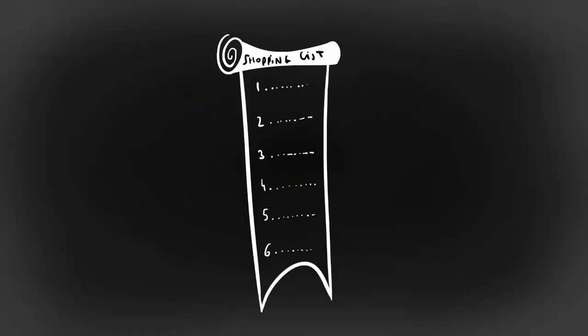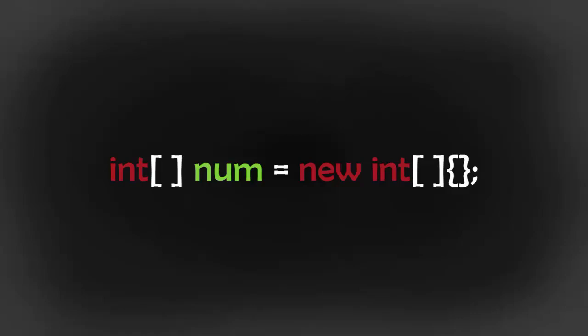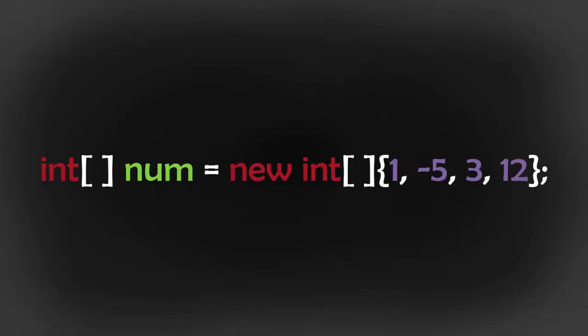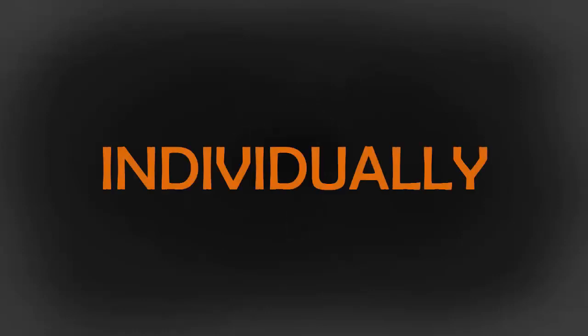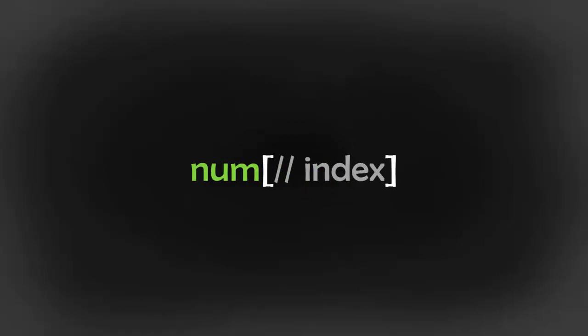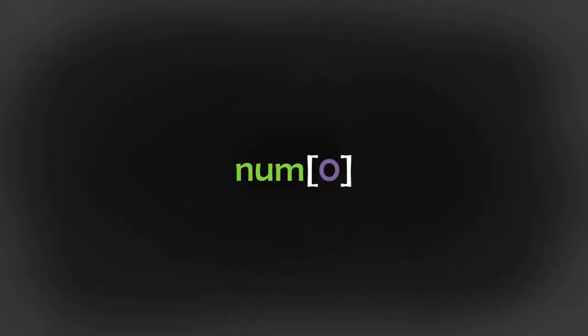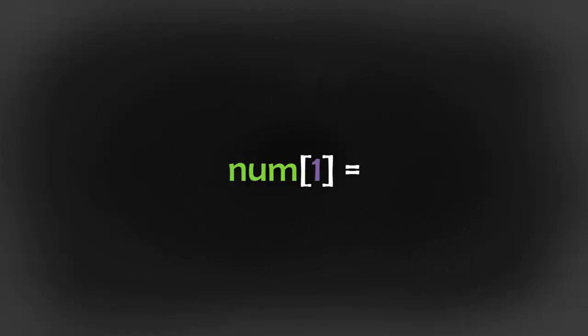Now we can set the values to our list items in two different ways. The first one is to put a pair of curly braces after the array initialization and then set the values separating each one with a comma. The other way is to set each one individually: first you select the array item you want to set the value for by writing the name of the array followed by a pair of square brackets, and inside the square brackets you put the index of the item. One note — arrays are indexed starting at 0, which means the first item has an index of 0, the second one an index of 1, and so on.